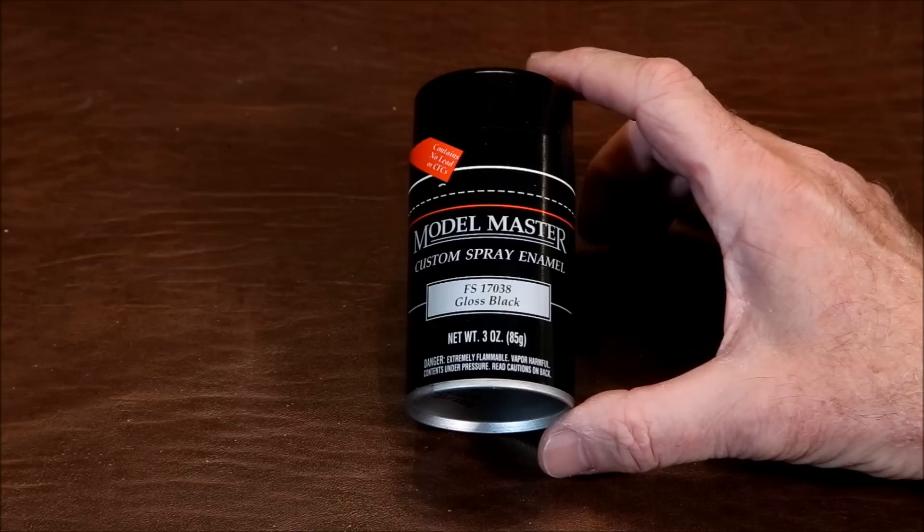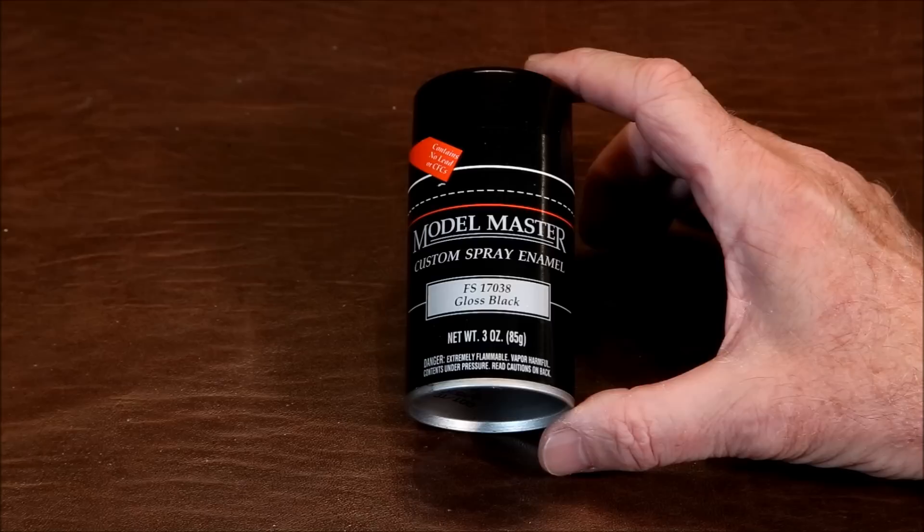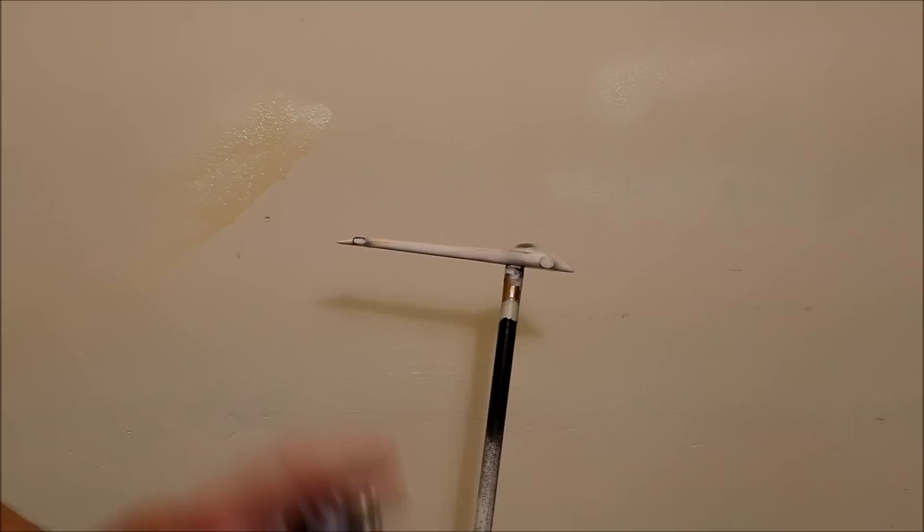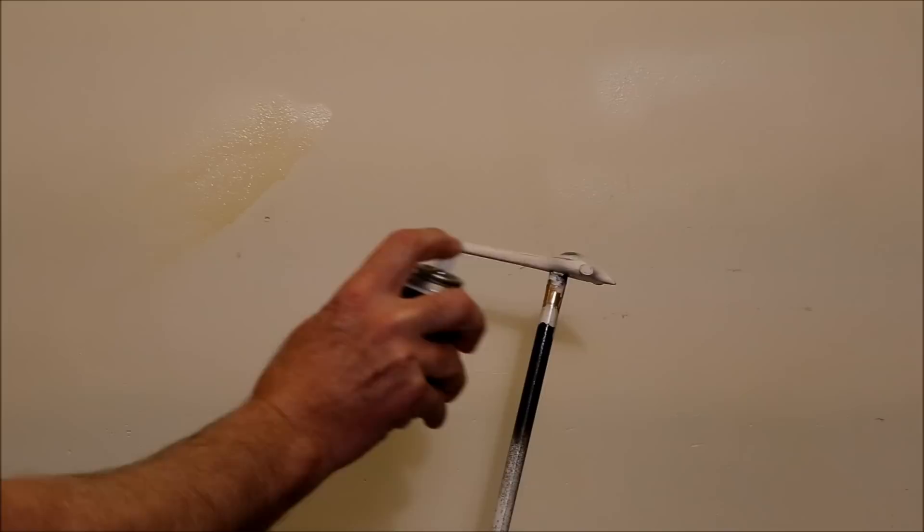Any gloss finish will work fine for the Spastex. Traditionally, black is used because it shows where you've sprayed the Spastex to make sure that you get even coverage. Working in a dust-free environment and making sure you keep the can well shaken, spray light coats of the Model Master Gloss Black, allowing 15-20 minutes between each coat.